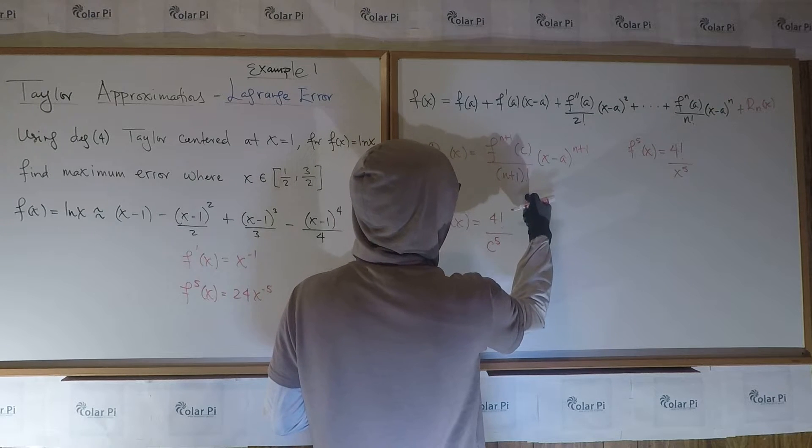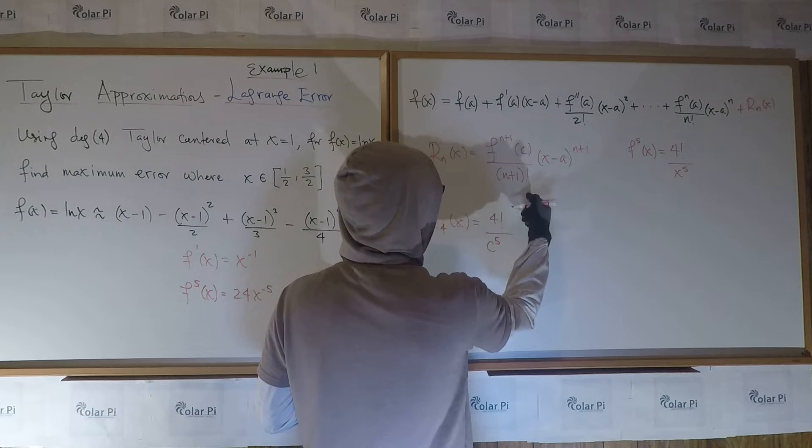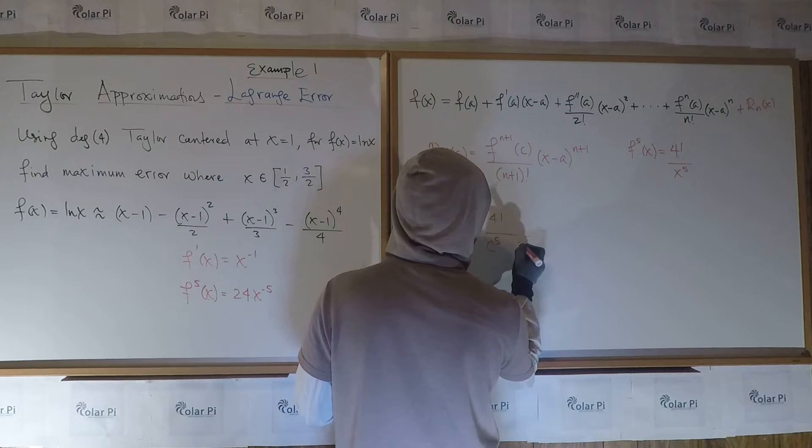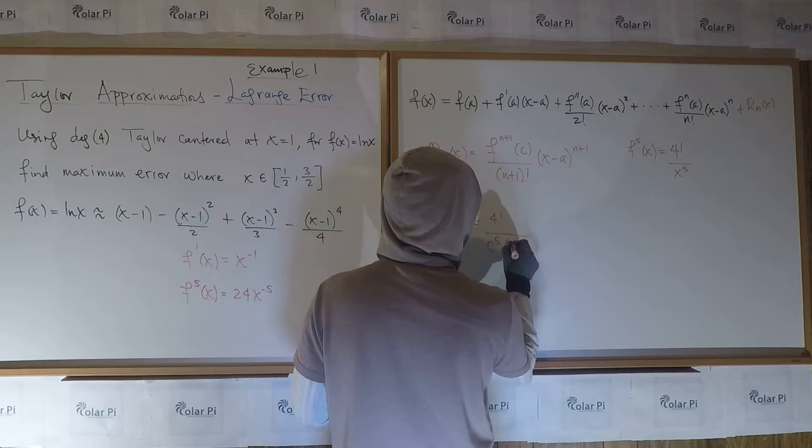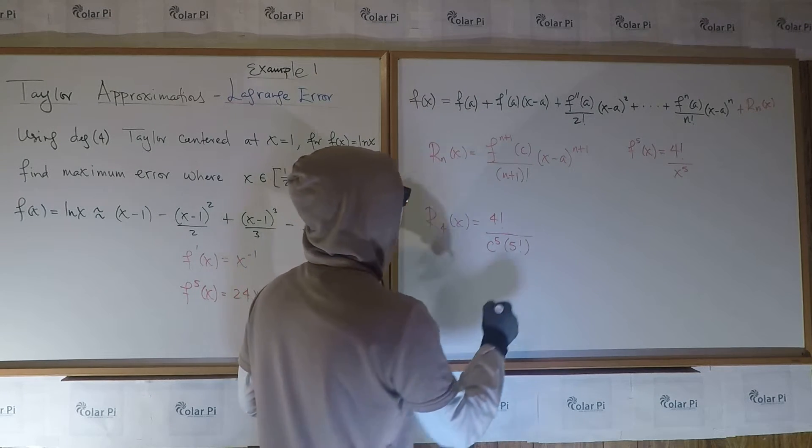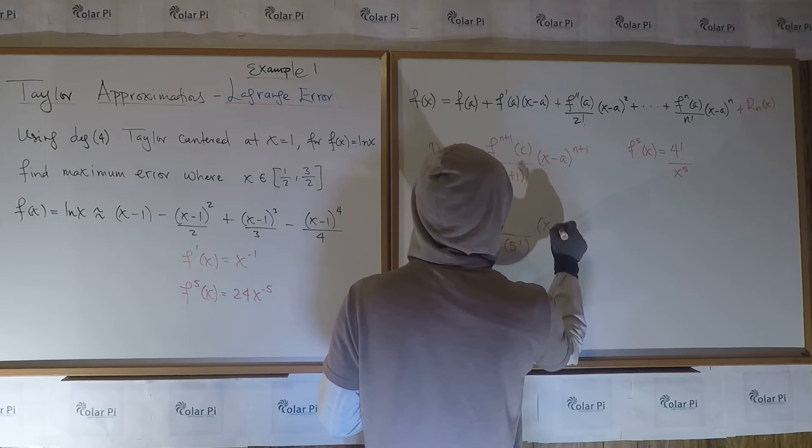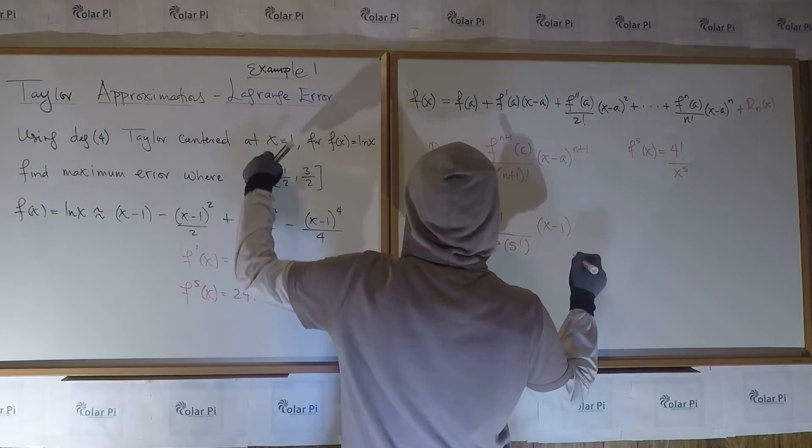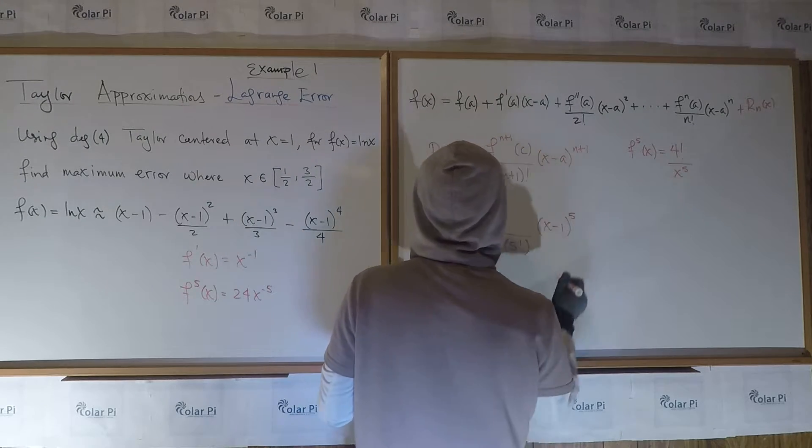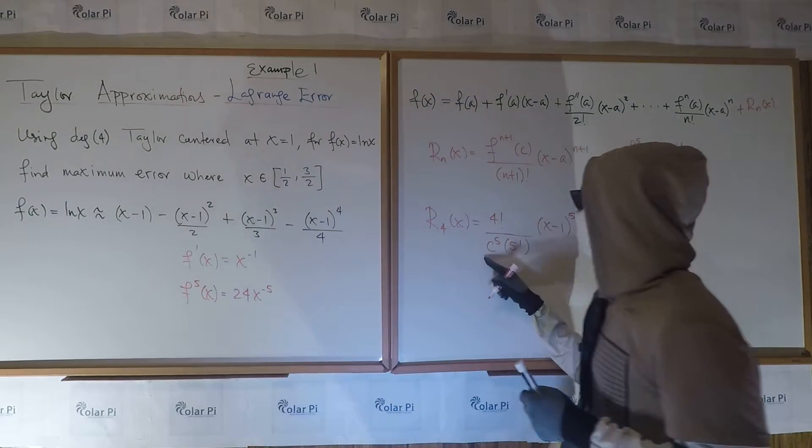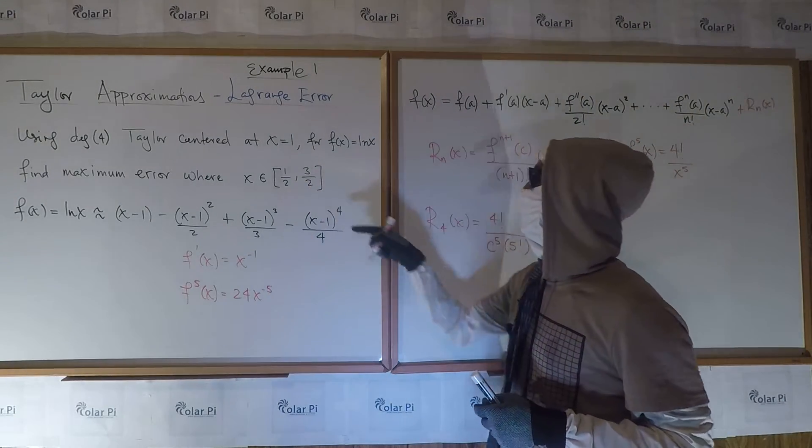And then of course we have this is divided by n plus one factorial, so that means it's divided by five factorial. And then of course we have x minus a, a is one, so x minus one, our center, to the fifth power. And what we need to do is find the biggest that this could be for x's in here.